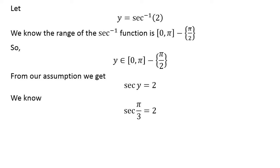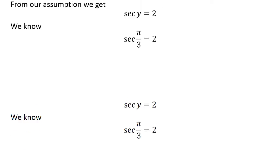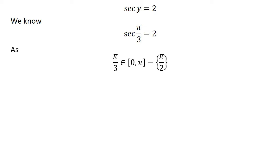We know secant of pi upon 3 is equal to 2. As pi upon 3 lies in the closed interval of 0 and pi except half of pi.